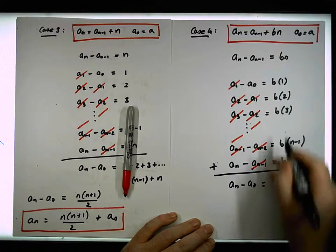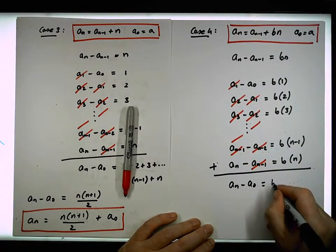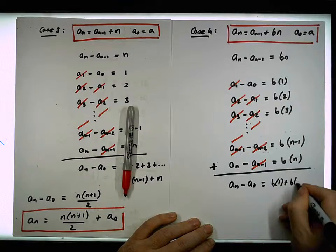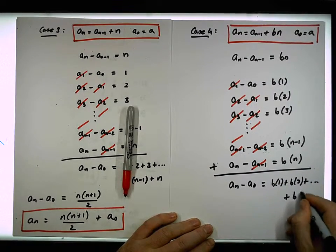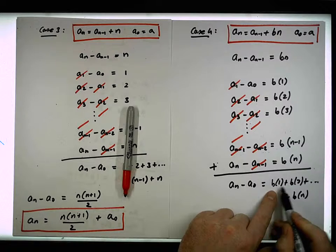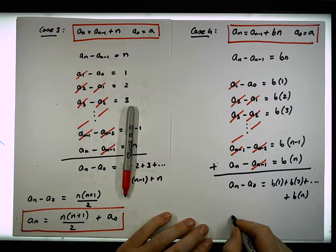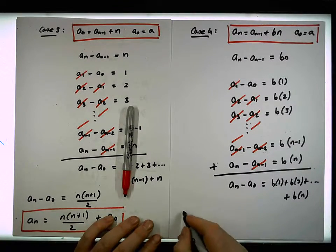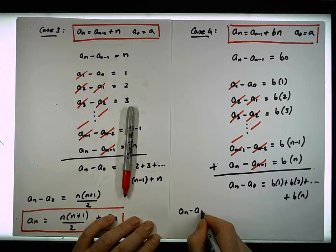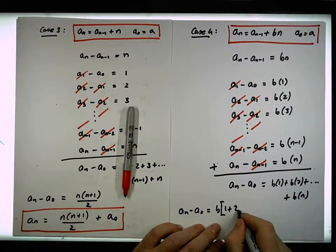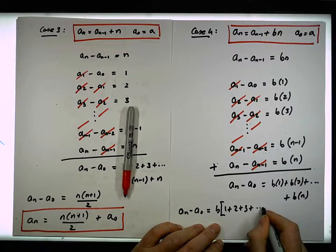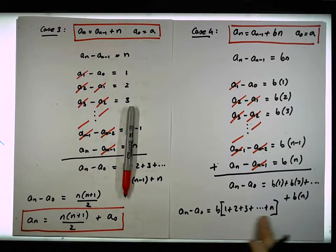Well, what's this? This is b times 1 plus b times 2 plus all the way through to b times n. There's a common factor here of b, so this is the same as what we end up with. We end up with an minus a0 must be equal to b times 1 plus 2 plus 3 plus all the way through to n. And we know what the sum of the first n natural numbers are—it's n times n plus 1 over 2.